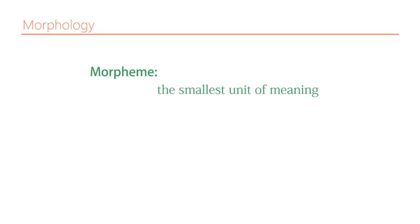The definition of morphemes as the smallest unit of meaning is of course the standard definition in English, but sometimes that definition is not straightforwardly helpful. Let me clarify what I mean — for example, the word 'receive' and 'conceive'.